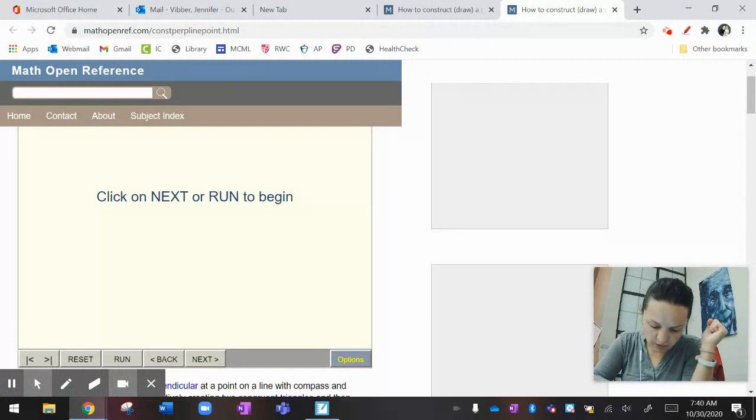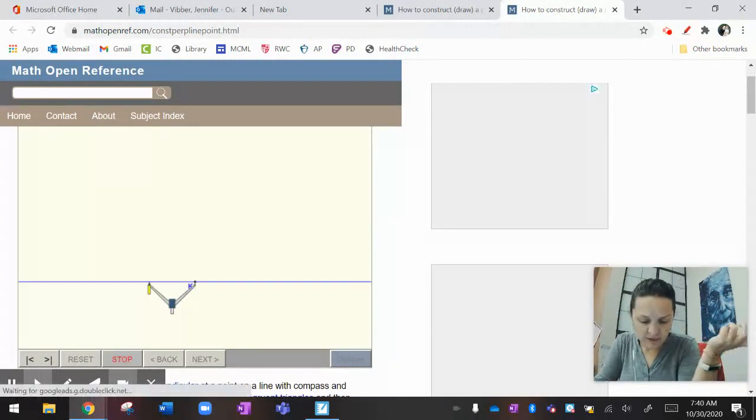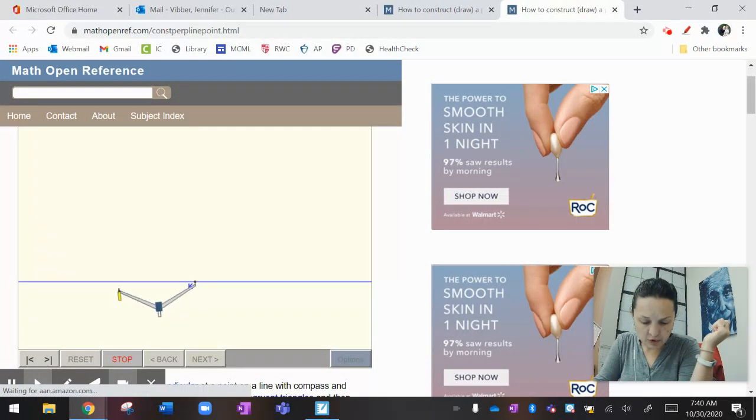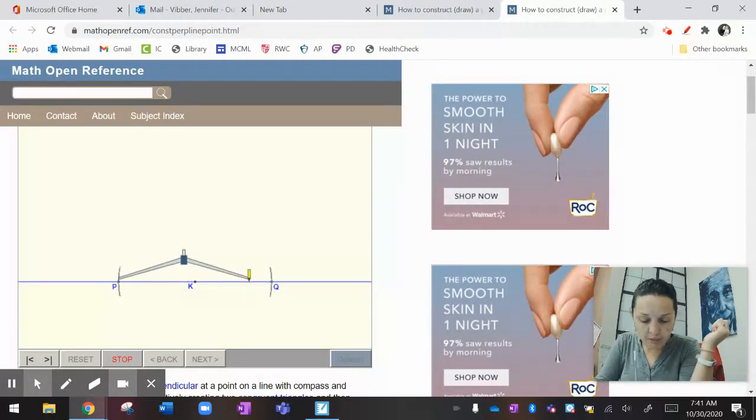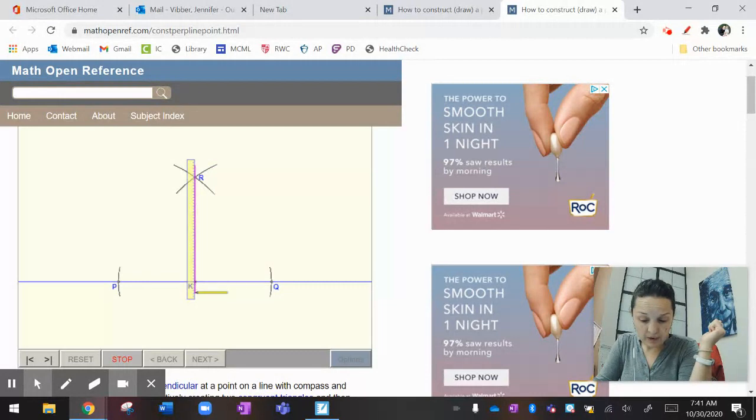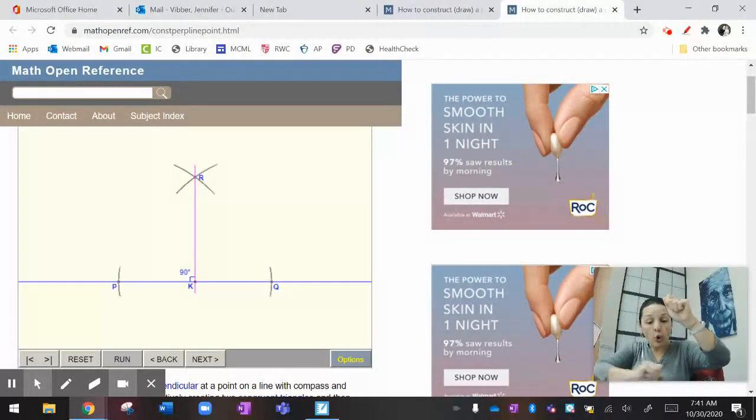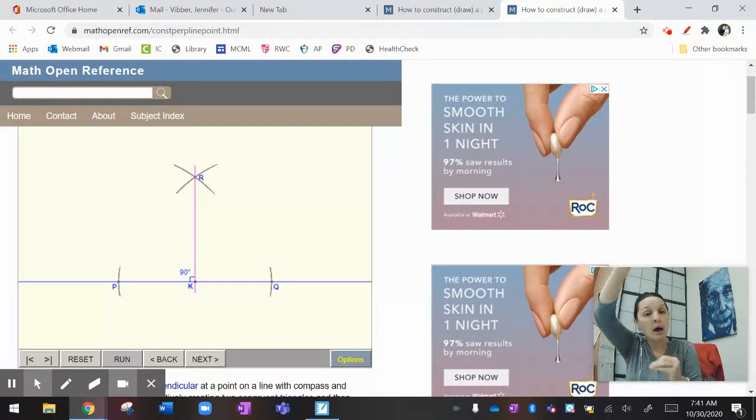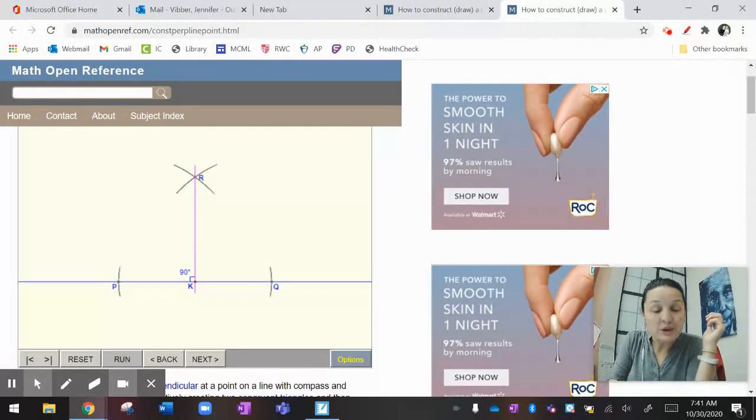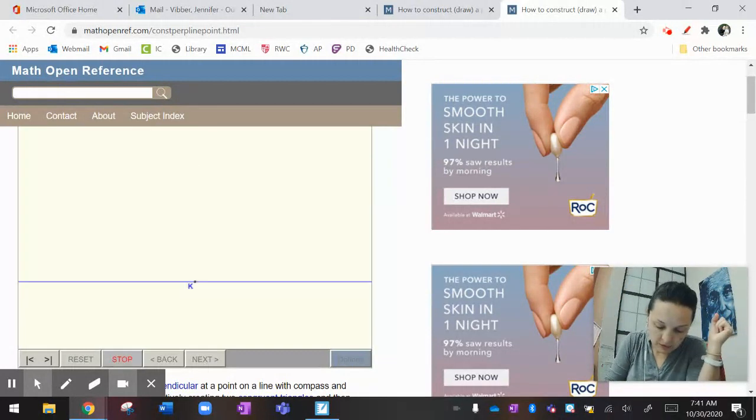Let me show you what that looks like on that other website. It's going to look a little bit different, but I'll take you through what it means. For this one, if they have a point on the line, they open the compass, hit the line twice. Then they open the compass more and they draw that arc and the other arc. And then they connect through K.